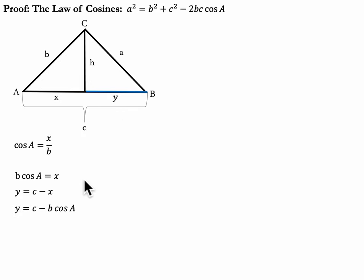And interestingly enough, we already said x is equal to b cosine A. So we can say that y is equal to c minus b cosine A. And I feel like we're getting somewhere. Look at this. In our goal, we've already got a b and a cosine A. We must be doing something, right? Let's keep going.